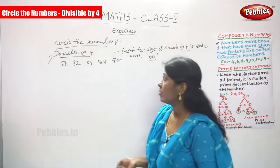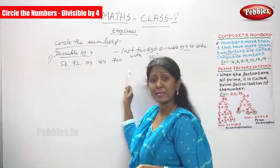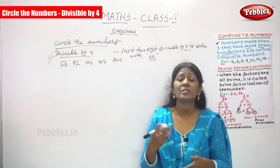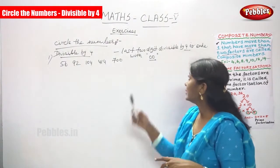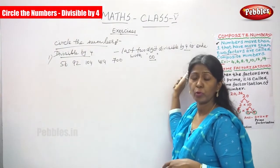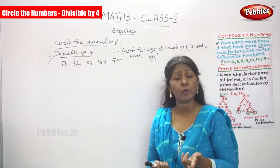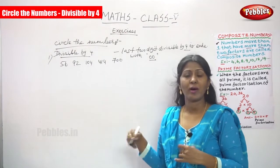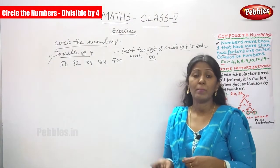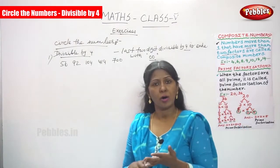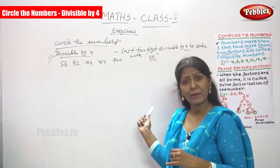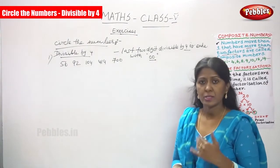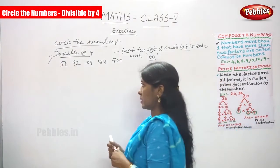First, you have to find out whether each number is divisible by 4. You are not using the multiplication table — you are going to use only the rules of divisibility that I have already taught you. That is: if the last two digits are divisible by 4, or the number ends with 00, then that number is divisible by 4. That is the rule of divisibility.